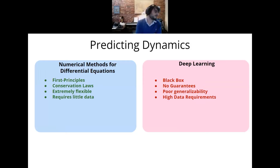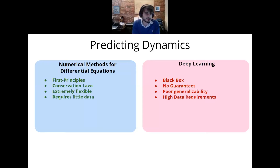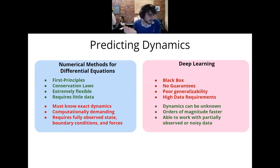With differential equations, you can bake in conservation laws, it's extremely flexible — you can use the same equation to describe a vast number of different phenomena — and you don't need much data, usually just enough to set a couple of constants. Deep learning does poorly in these categories: it needs lots of data to train, comes with no guarantees, is a black box that tries to learn the function from data, so we don't know that it conserves certain quantities.